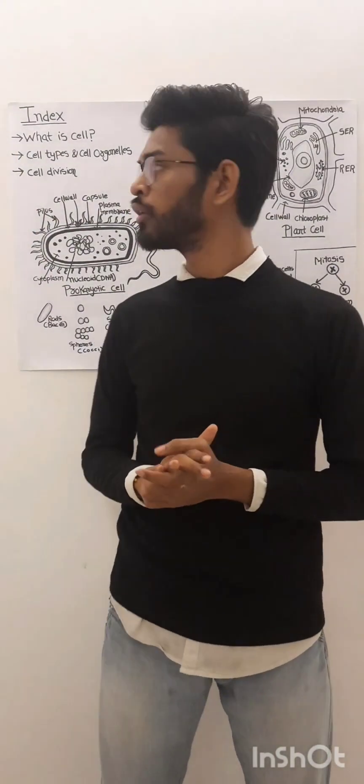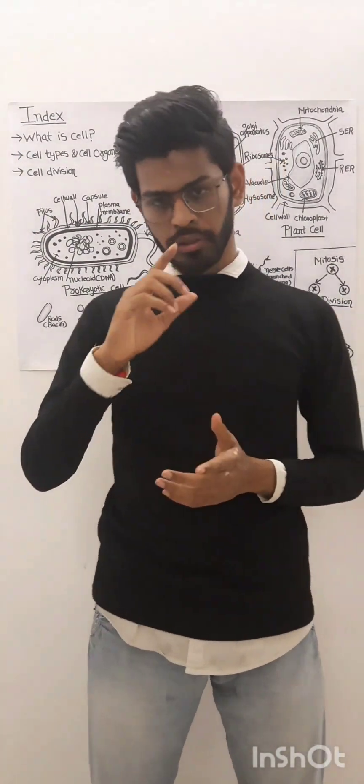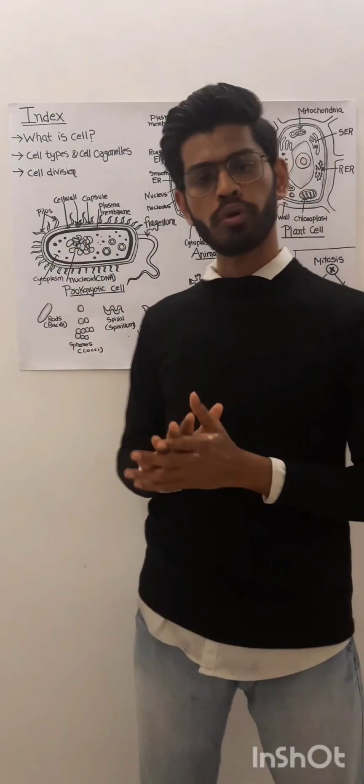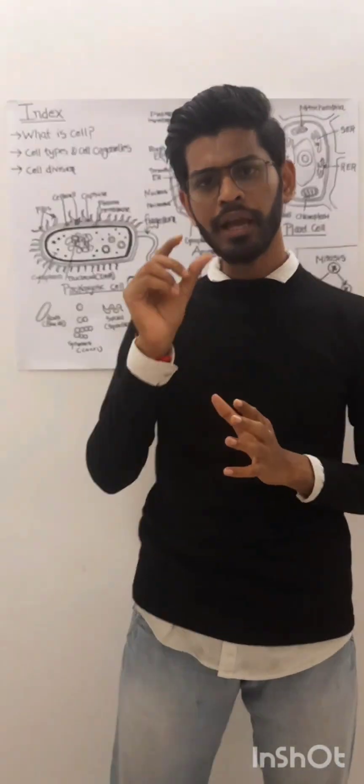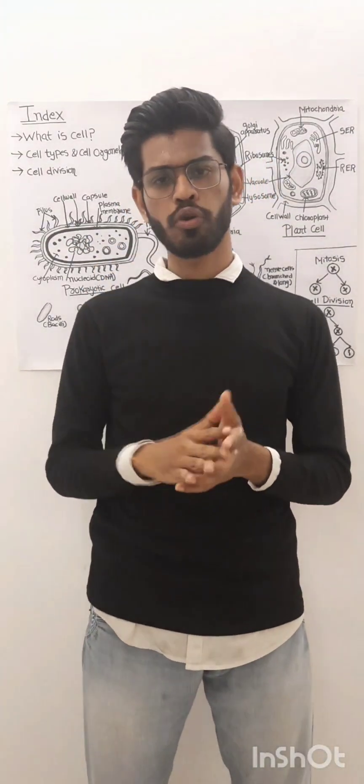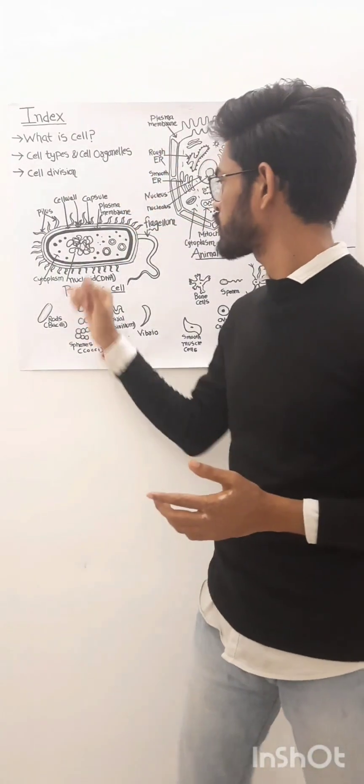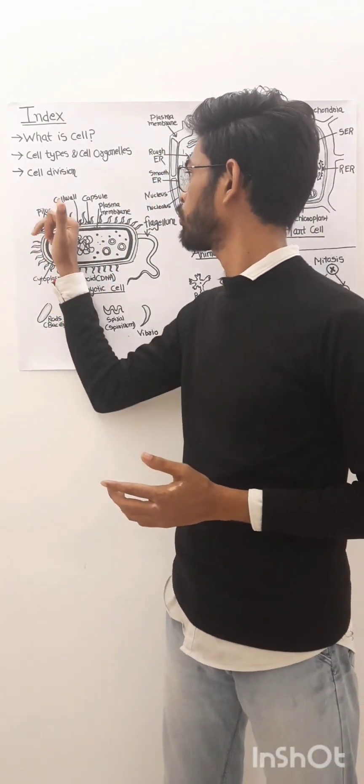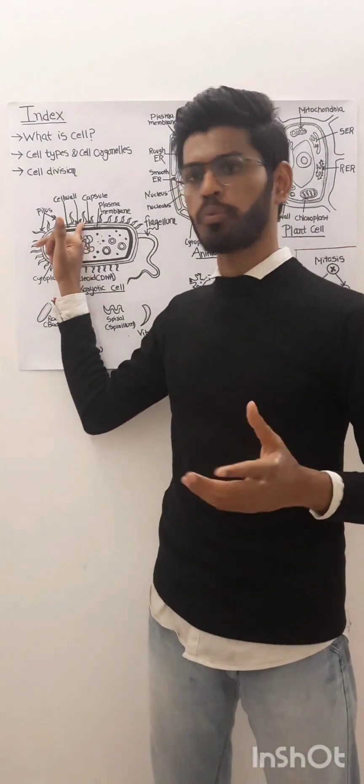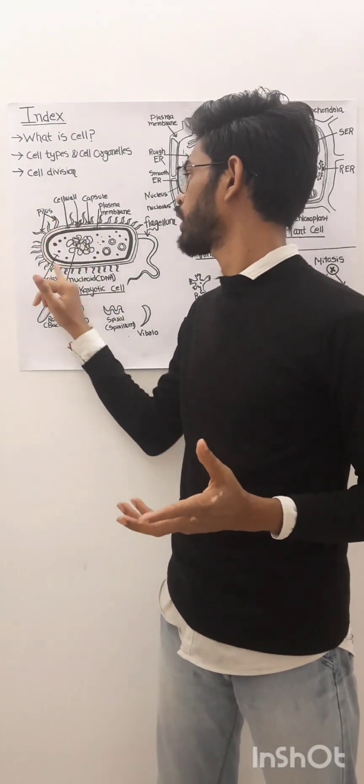They are also known as unicellular organisms. Around 3.5 billion years ago, we can say that life originated from them. They have existed way before dinosaurs. This is the structure of a prokaryotic cell. Prokaryotic cells are very small, they are simple, and grow more rapidly compared to eukaryotic cells. The prokaryotic cell has around three layers.